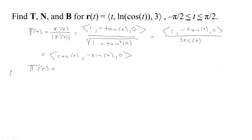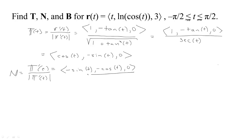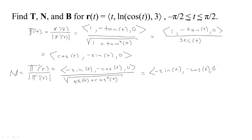Now we calculate the unit normal by taking T prime divided by the length of T prime. T prime of (cosine t, minus sine t, 0) gives (minus sine t, minus cosine t, 0). The length is the square root of sine squared t plus cosine squared t, which is 1, so the unit normal N is (minus sine t, minus cosine t, 0).